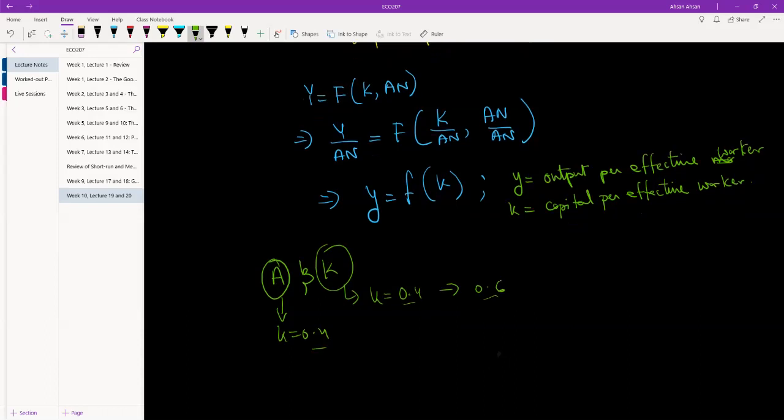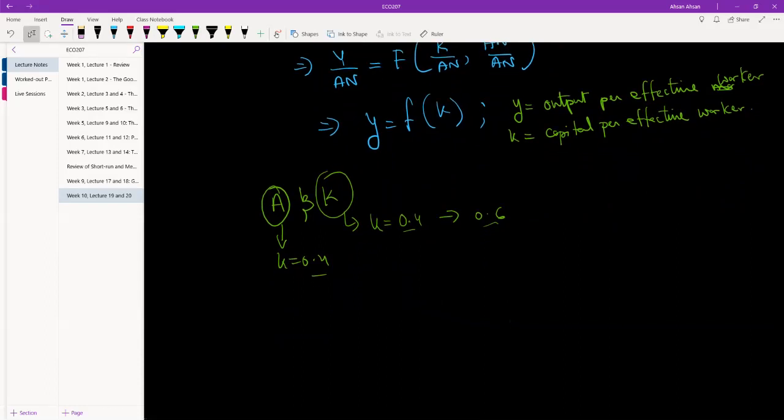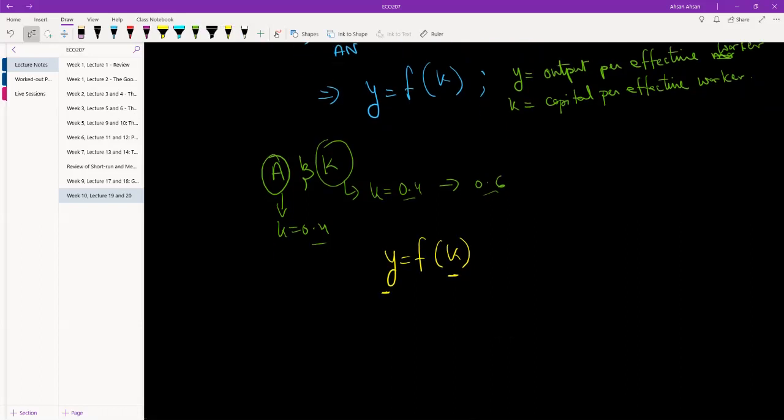We're going to assume two more things. Something we had ignored in the previous chapter is that we allowed everything to vary, so Y equals to F(K, An), both Y was changing, we saw how Y would go up and K was changing as well, but we ignored two things: one is population and one is technology.